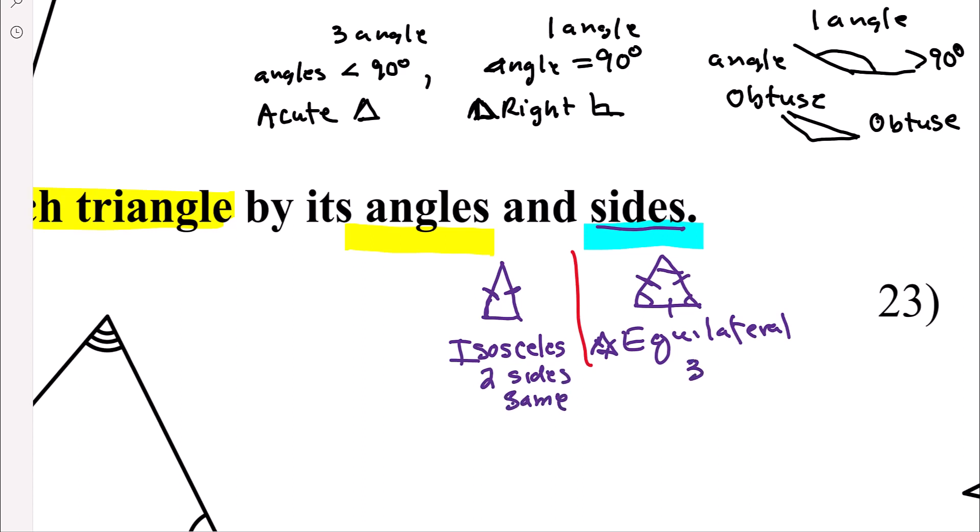Equilateral, three sides are the same. And then you've got a possibility where none of the sides, so no sides are the same. And when that's the case, this would be a scalene.